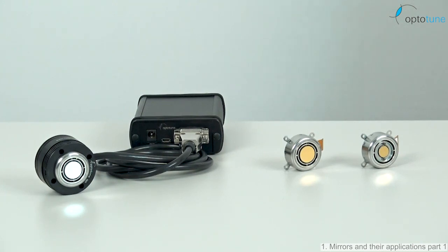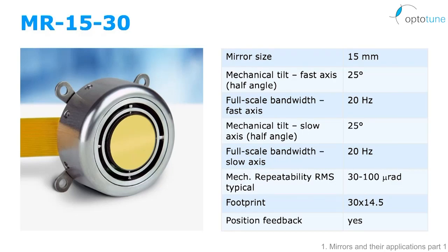Now we come to the products. On the mirror side, we have the MR-10-30 with 15mm mirror size and plus-minus 25 degrees mechanical tilt in both axes. The mirror can thus cover a total field of view of 100 degrees. At full stroke, the max frequency is 20 Hz. For plus-minus 5 degree tilt, the frequency is in the order of 40 to 50 Hz. An optical position feedback sensor is integrated into the mirror. The MR-10-30 is ideal for point and shoot applications as well as slower vector scan applications.